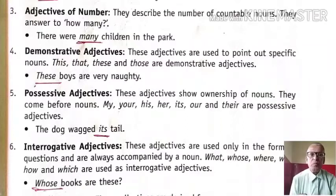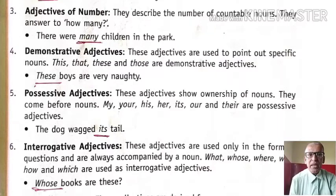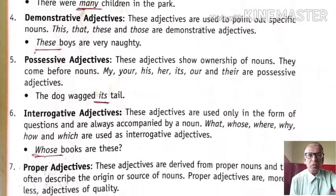Five, possessive adjectives. These adjectives show ownership of nouns, so they come before nouns. My, your, his, her, its, our, their are possessive adjectives. Example: the dog wagged its tail — so its stands for the dog.